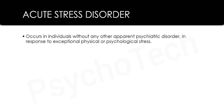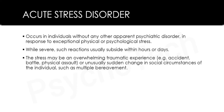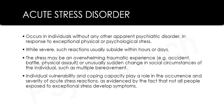The first type is acute stress disorder, which occurs in individuals without any other apparent psychiatric disorder in response to exceptional physical or psychological stress. While severe, such reactions usually subside within hours or days. The stress may be an overwhelming traumatic experience — for example, an accident, battle, or physical assault — or an unusually sudden change in social circumstances. Individual vulnerability and coping capacity play an important role in the occurrence and severity of acute stress reactions.